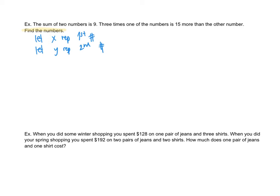You should have two sentences in your scenario, and each sentence will give you an equation. The first sentence: the sum of two numbers is nine. Sum means addition, so if I add my two numbers X and Y, I get X + Y = 9. There's the first equation.